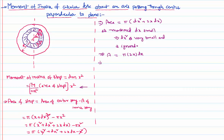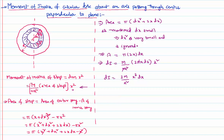Substituting this value, I will get the moment of inertia of the small strip: dI equals dm times x squared. Here dm equals total mass divided by total area (pi R squared), multiplied by the area of that strip (2·pi·x·dx), and another x squared. Pi and pi cancel, so I can write dI as 2M divided by R squared, times x cubed, times dx. This is the moment of inertia of the small strip only.